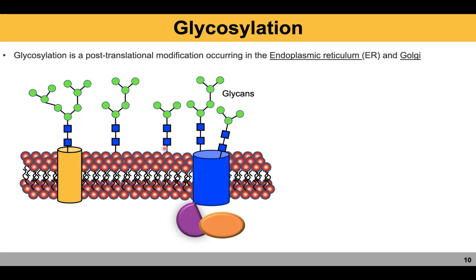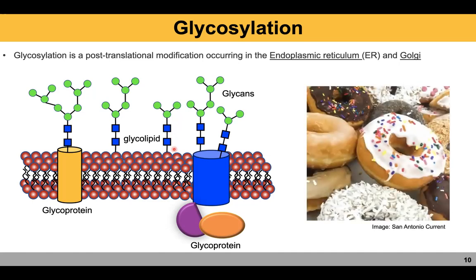Similarly, lipid molecules with glycans are called glycolipids. One important example of glycosylation is blood groups — blood group is defined by which glycan you have on top of your blood cells. Blood group A has a different glycan than blood group B and O, and interestingly, blood groups A and B differ by only one sugar. In essence, your entire cell surface is coated with sugars — just like a doughnut — and you can have different flavors of glycan on top of your cell surface.